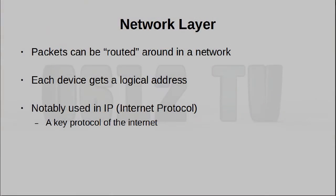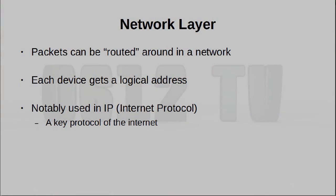Moving one layer up again to layer 3, the network layer. On this layer, we introduce a new concept of routing. Every device on a network now gets a logical address. When you want to pass a packet to a particular address, you can actually pass it to a middleman who will relay it to that final address. This is known as routing, and one very notable example of a protocol that does this is IP — which is how much of the internet actually works, and same goes for actually setting up your home networks.